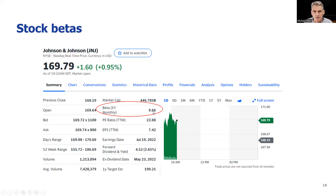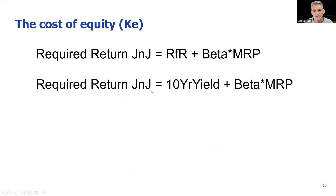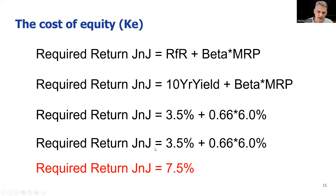Once we've got a beta, it's easy to plug it into our formula for the cost of equity — the capital asset pricing model. Let's do it for Johnson & Johnson: what can you get for free by lending your money to the government? Take Johnson & Johnson's beta and multiply that by the market risk premium of 6%. If you invested in Tesla instead, with a beta of about 2.3 times 6%, the required return is going to be quite a bit higher than Johnson & Johnson, because it's more risky.